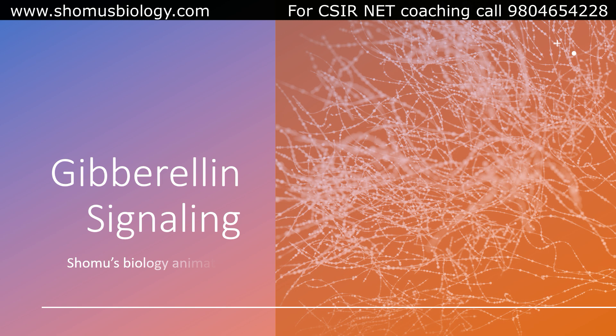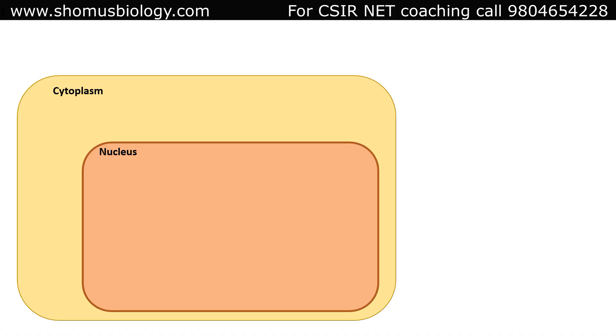Now we will talk about the gibberellin signaling pathway. Gibberellic acid signaling allows plant cells to grow and expand. Without gibberellin, plants may be dwarf; with proper gibberellin concentration, plants are of normal height. To understand gibberellin signaling, let's look at the different components: like every signaling pathway, there must be a ligand, a receptor, some inhibitors, and the gibberellin response genes.